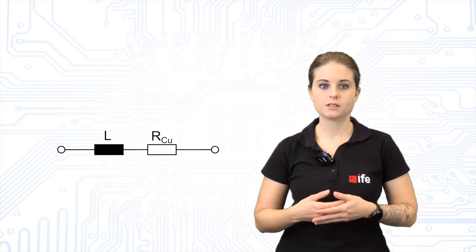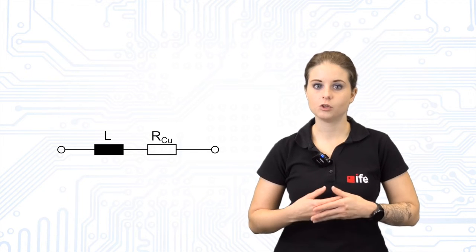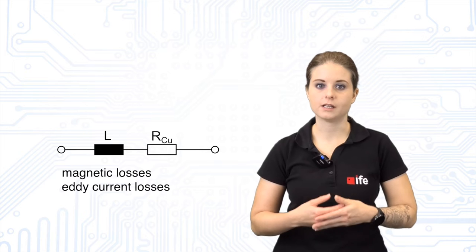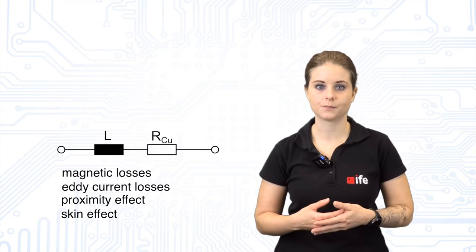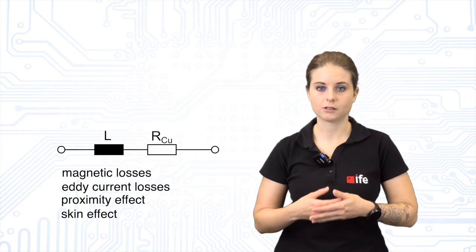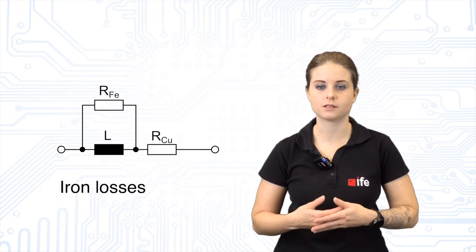If the frequency increases the resistance changes. These additional losses occur because of magnetic losses and eddy current losses such as the proximity effect and the skin effect. These frequency dependent losses are called iron losses and are modeled with a parallel resistance RFE.